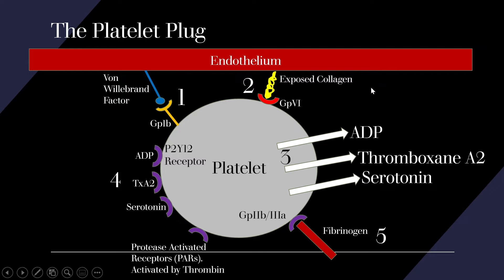It's important to know the names of these receptors because there really is a pathology or disease state where each one is deficient. Von Willebrand binds to GP1B, creating the initial connection to the endothelium. There's exposed collagen on the endothelium — remember, the platelet plug starts with endothelial damage — and that collagen binds to the GP6 receptor. Once you have these two connections, the platelet secretes ADP, thromboxane A2, and serotonin, which create a positive feedback loop. Finally, fibrinogen cross-links platelets via GP2B3A receptors.